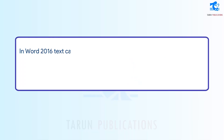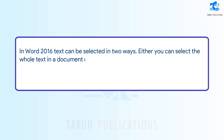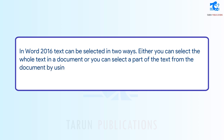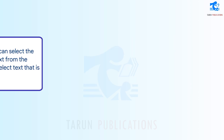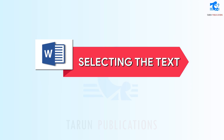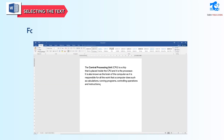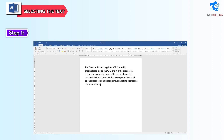In Word 2016, text can be selected in two ways. Either you can select the whole text in a document, or you can select a part of the text from the document by using the mouse or keyboard. You can also select text that is in different places. To select text, Step 1: select the text. Step 2: apply the desired changes.